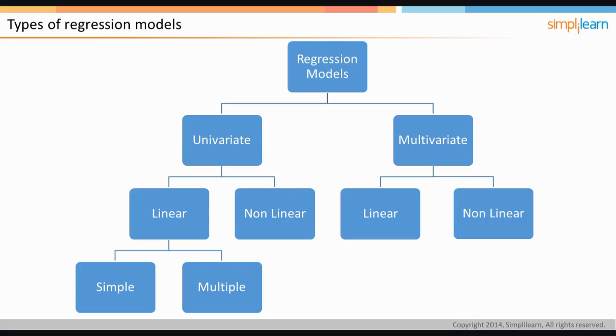In the univariate models, the response variable is affected by just one predictor variable. It is the simplest form of statistical analysis. Correspondingly, the multivariate models refer to models where the response variable is affected by more than one predictor variables.